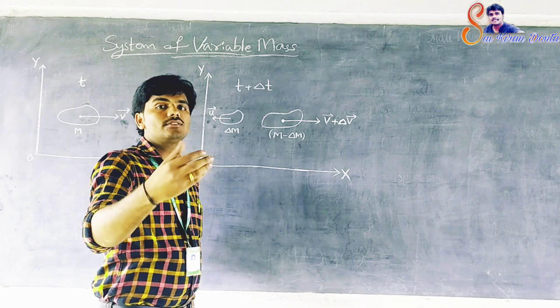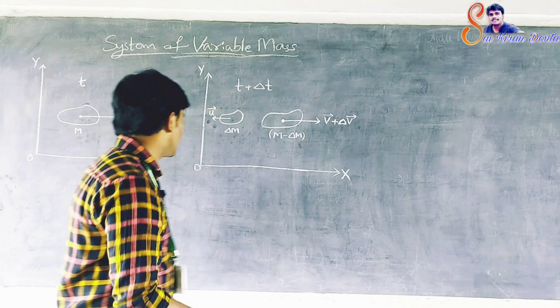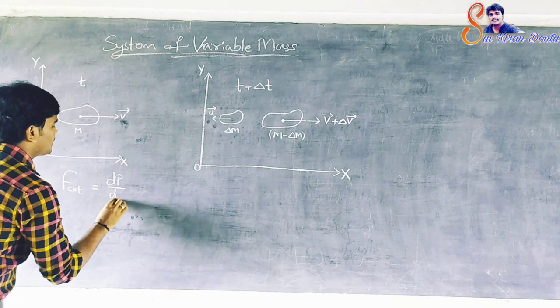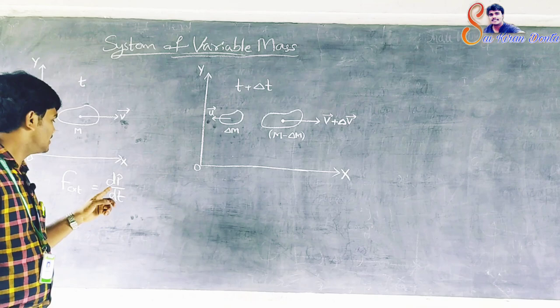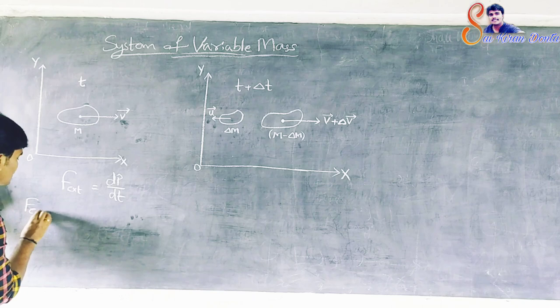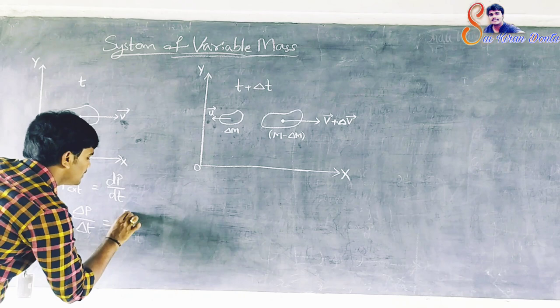From Newton's second law, F external equals dp by dt. Force is equal to rate of change of momentum. For a small interval of time, we can write F external equals delta p by delta t, which equals pf minus pi by delta t.